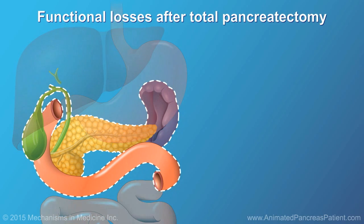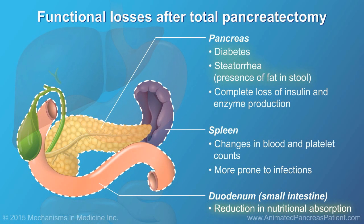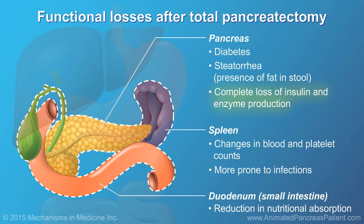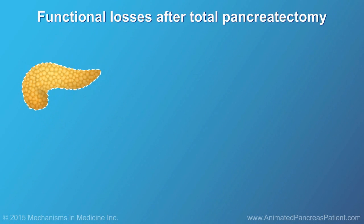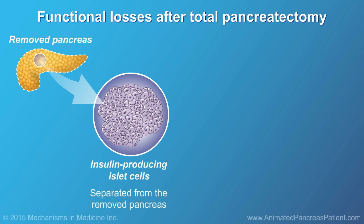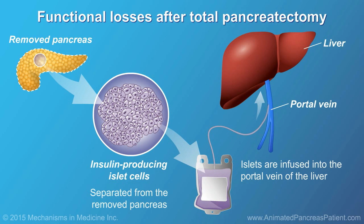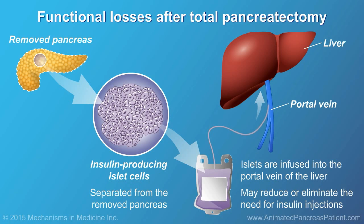After a total pancreatectomy, you may experience all of the changes associated with the Whipple procedure and distal pancreatectomy, but you will also experience complete loss of pancreatic function, including insulin and enzyme production. In certain cases, total pancreatectomy can be combined with transplantation of insulin-producing islets, which are separated from the removed pancreas and transplanted into the liver. This additional procedure may reduce or eliminate the need for insulin injections.